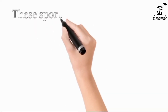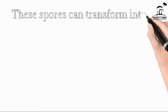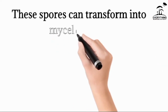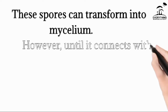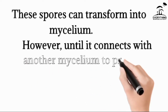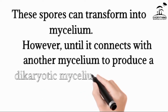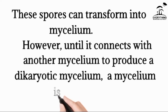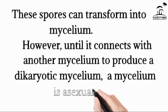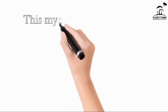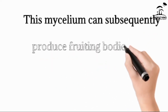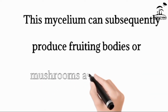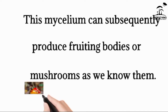The spores that the fungi produce can be transformed into mycelium. When the fungi produces spores, they are then transformed into mycelium. However, until it connects with another mycelium to produce a dikaryotic mycelium, the mycelium is considered asexual. This mycelium can subsequently produce a mushroom, or a fruiting body of fungi. It's not all mushrooms that are edible, and all types of mushroom also develop from mycelium, so mycelium can be either edible or non-edible.